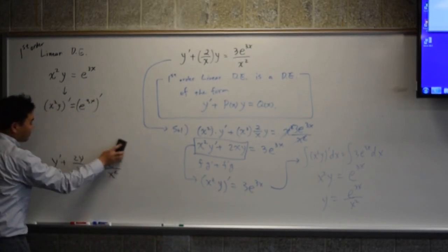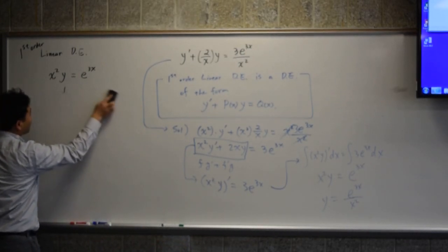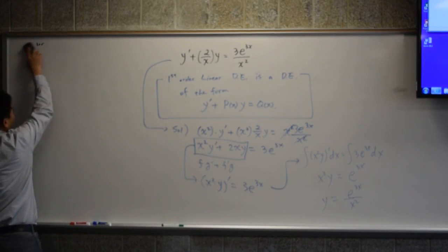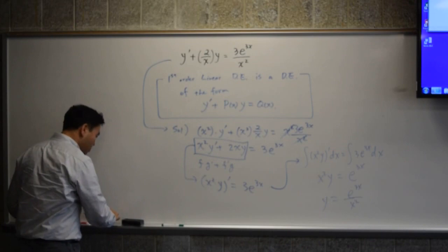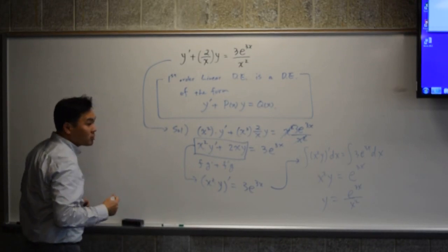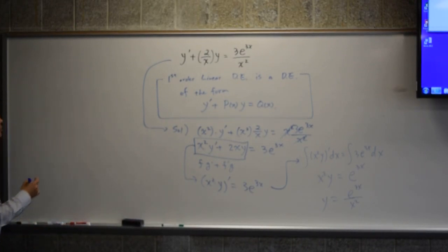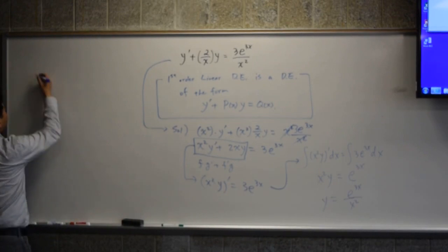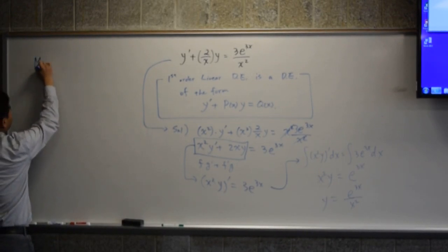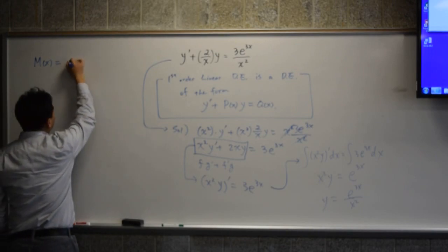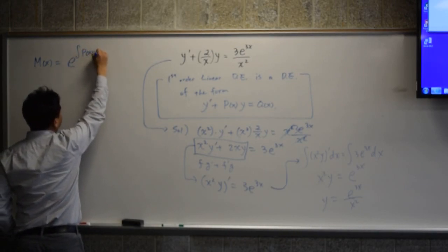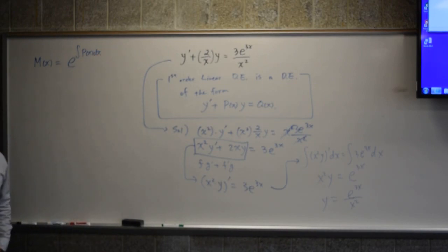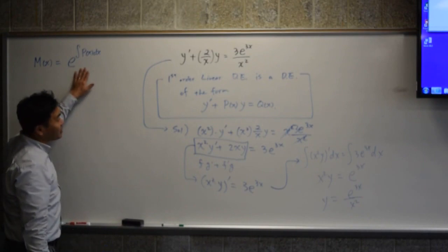Now, I don't have enough time today to explain why this one works, but let me just show you the formula. You will learn tomorrow that the multiplier that you want to multiply on both sides will be e to the integral of p(x) dx.